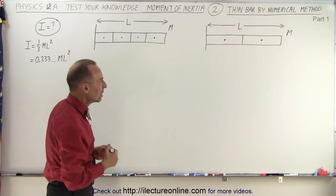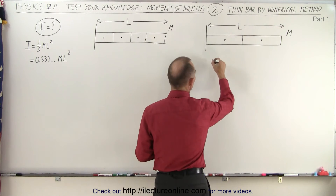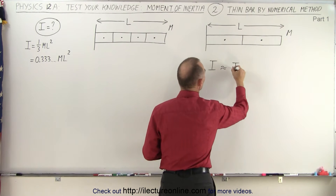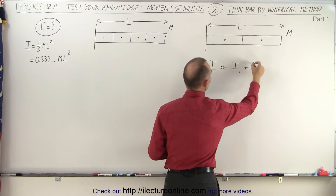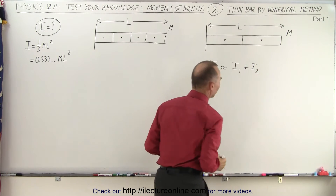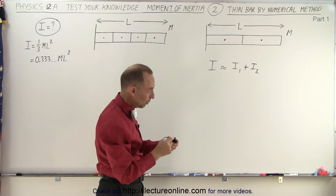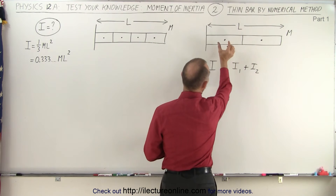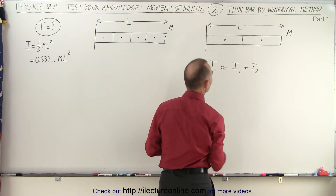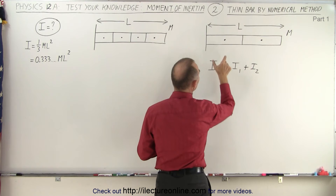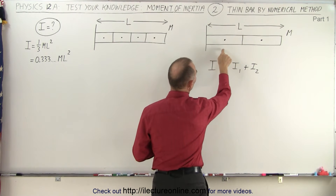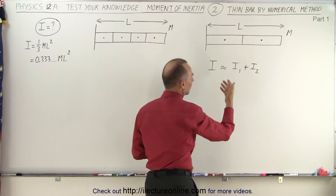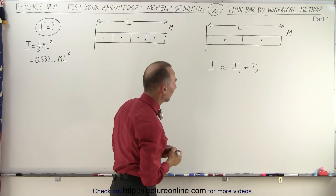The total moment of inertia in this case is going to be approximately equal to the moment of inertia of the first section plus the moment of inertia of the second section. We're going to assume that all of the mass of each section is at the center of mass of each section. That means the distance from the point of rotation to the center of mass is the distance r, so we use the mr squared formula.